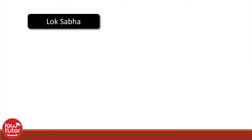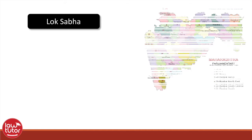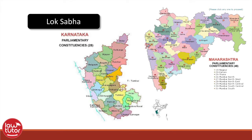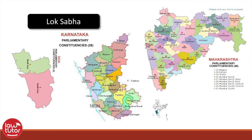For elections to the Lok Sabha, each state is divided into constituencies on the basis of territory. For example, Maharashtra is divided into 48 constituencies, Karnataka is divided into 28 constituencies, Goa is divided into two constituencies, and so on. The division into constituencies is done on the basis of the size and population of a state.